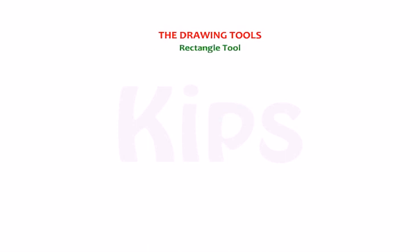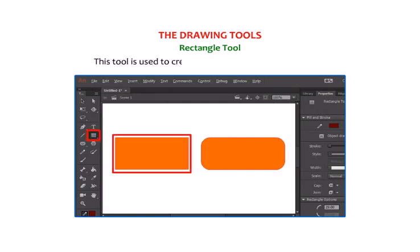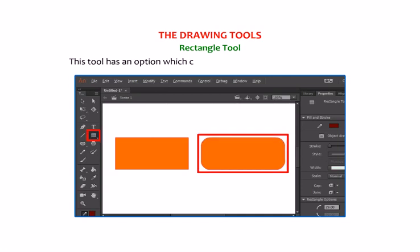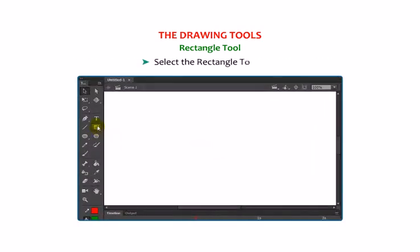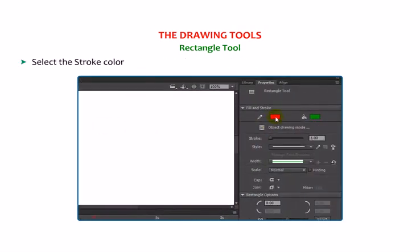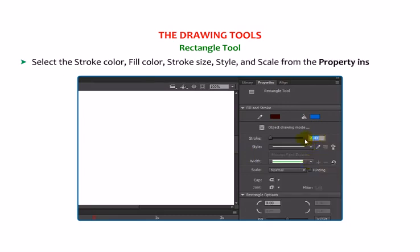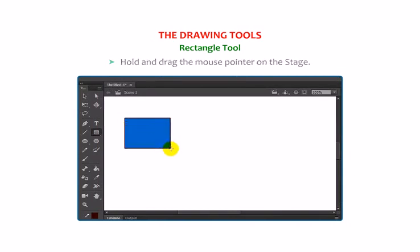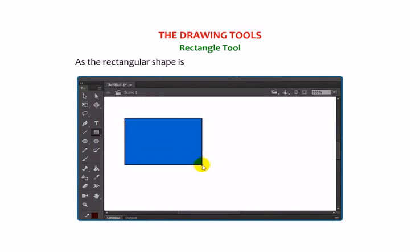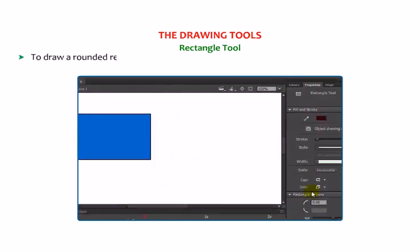We will discuss about the Drawing Tools. Rectangle Tool: this tool is used to create square and rectangular shapes. It has an option which can be set to draw a rounded rectangle. Select the Rectangle Tool, then select the Stroke Color, Fill Color, Stroke Size, Style and Scale from the Property Inspector. Hold and drag the mouse pointer on the stage. As the rectangular shape is created, release the left mouse button.